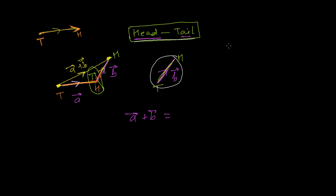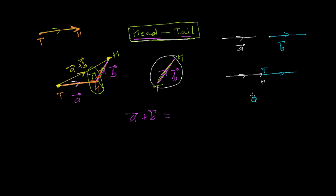Similarly, if we have simple collinear vectors — let's say this is vector A and this is vector B — you write vector A first. The head of vector A meets the tail of vector B; drag the tail here and write vector B. This represents vector A plus vector B. The direction doesn't change, both vectors point the same way, and the sum also has the same direction.